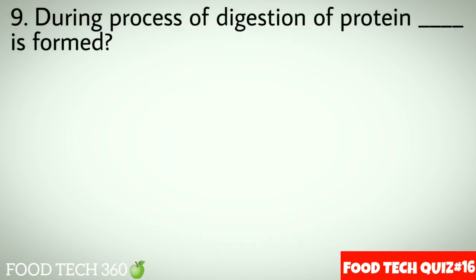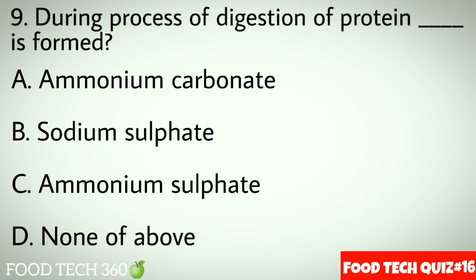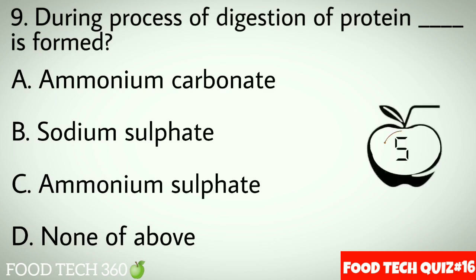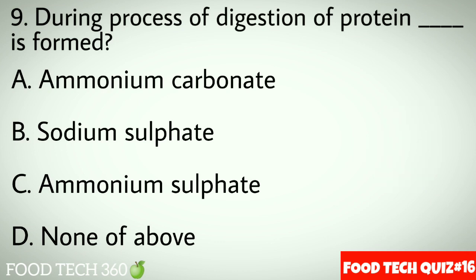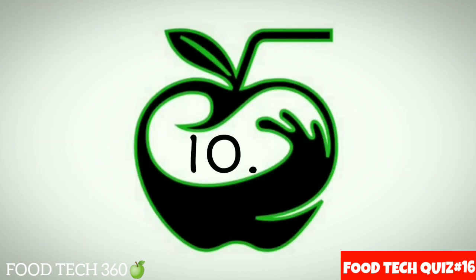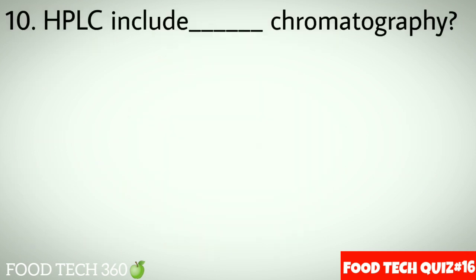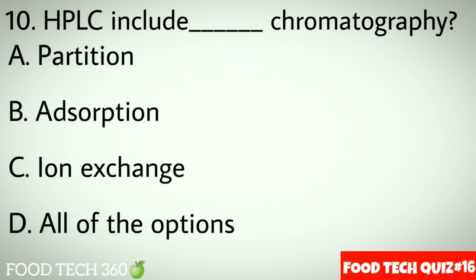Question No.9: During process of digestion of protein, dash is formed. Options A: Ammonium carbonate. B: Sodium sulfate. C: Ammonium sulfate. D: None of the above. Correct answer C: Ammonium sulfate.